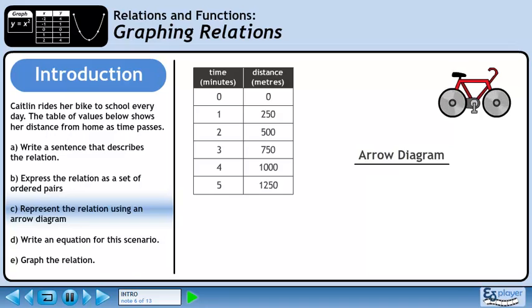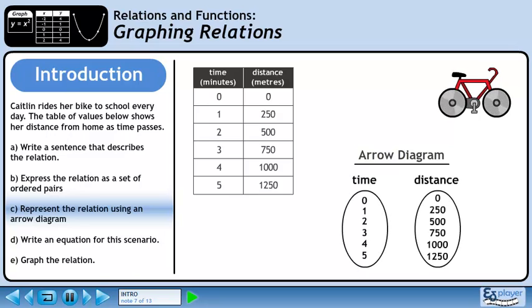In Part C, we will represent the relation using an arrow diagram. Draw two bubbles, one for time and the other for distance. Use arrows to map the time values to the distance values.